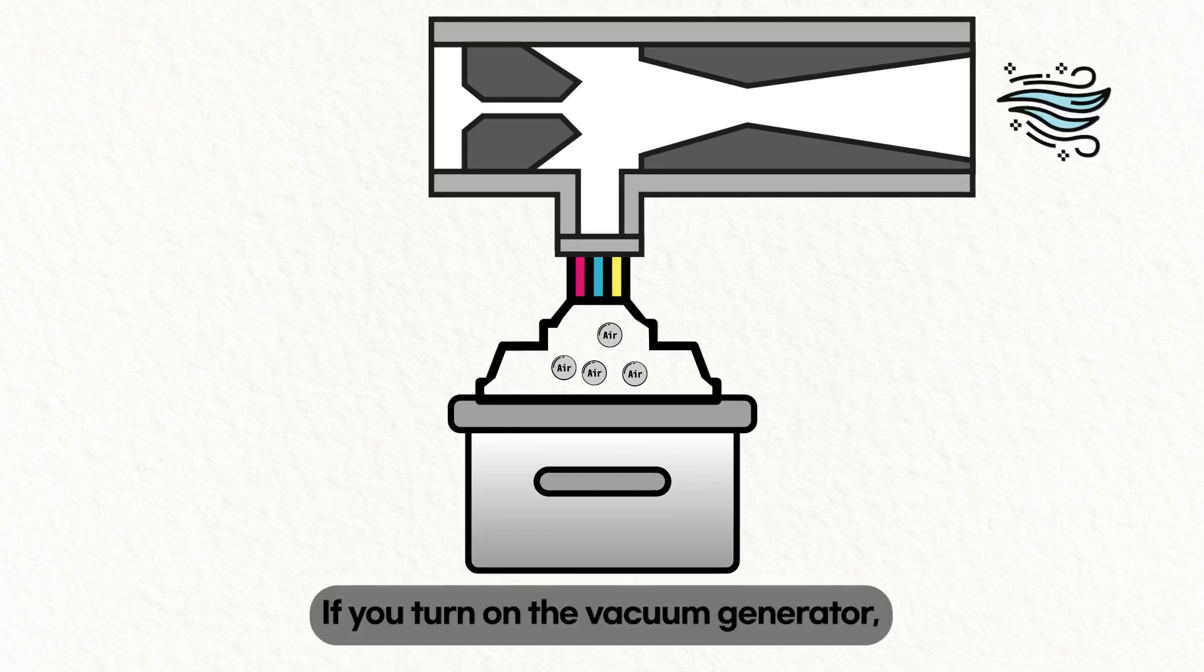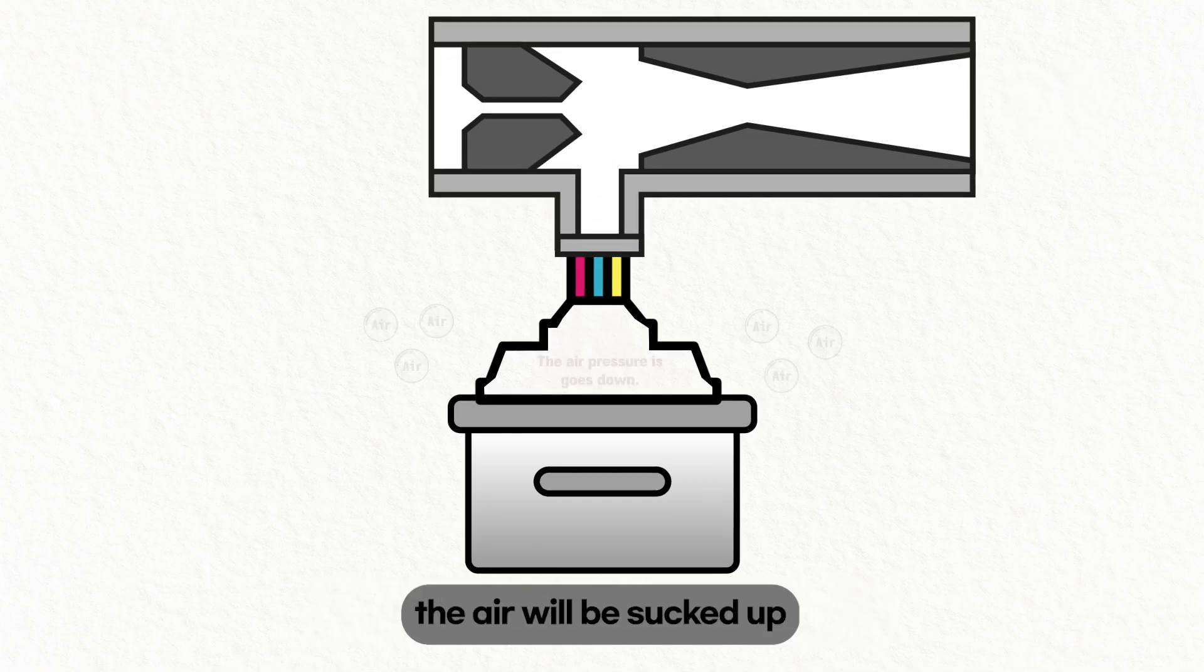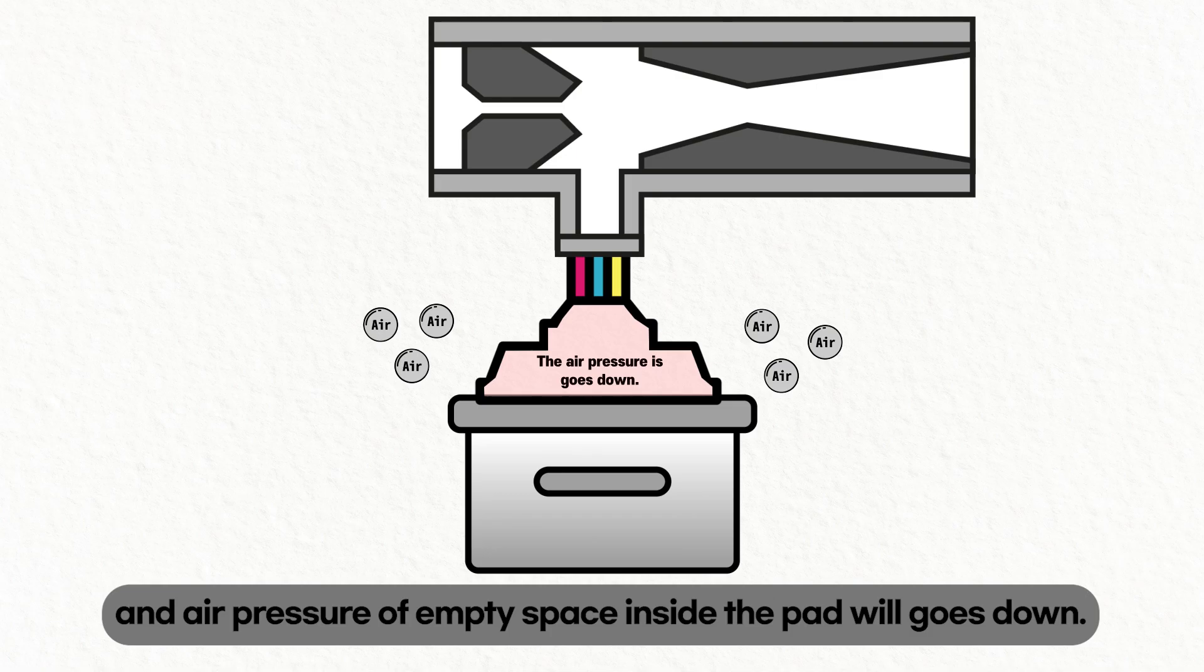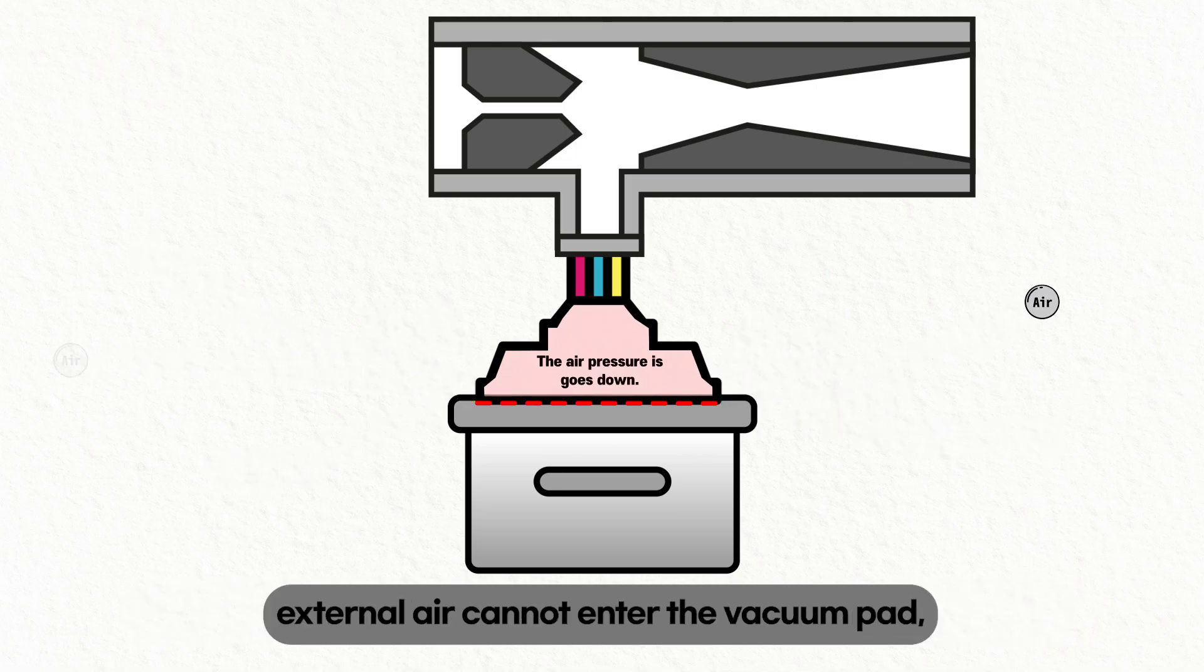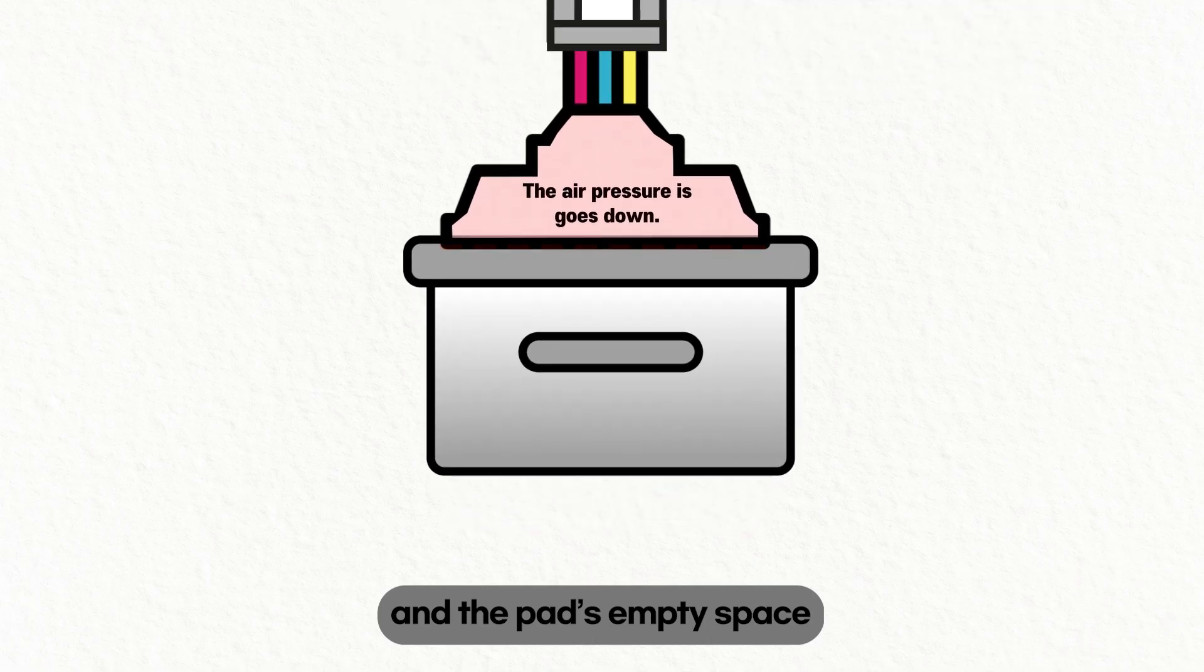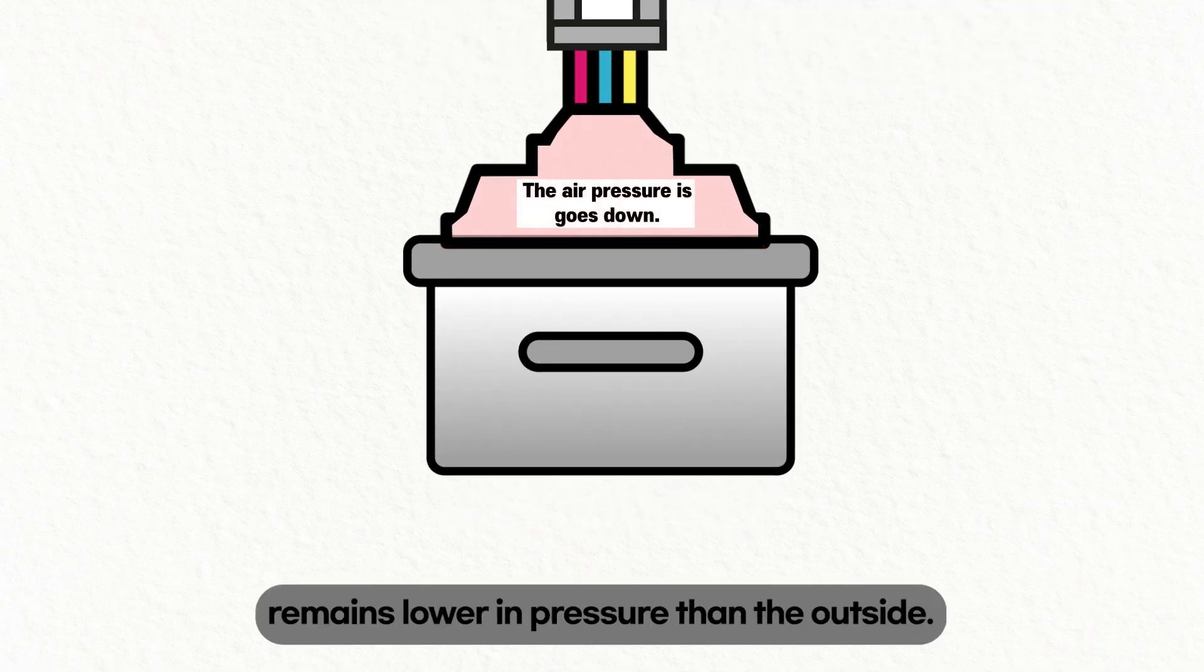If you turn on the vacuum generator, the air will be sucked up and air pressure of the empty space inside the pad will go down. Also, since the object and vacuum pad are tightly attached, external air cannot enter the vacuum pad and the pad's empty space remains lower in pressure than the outside.